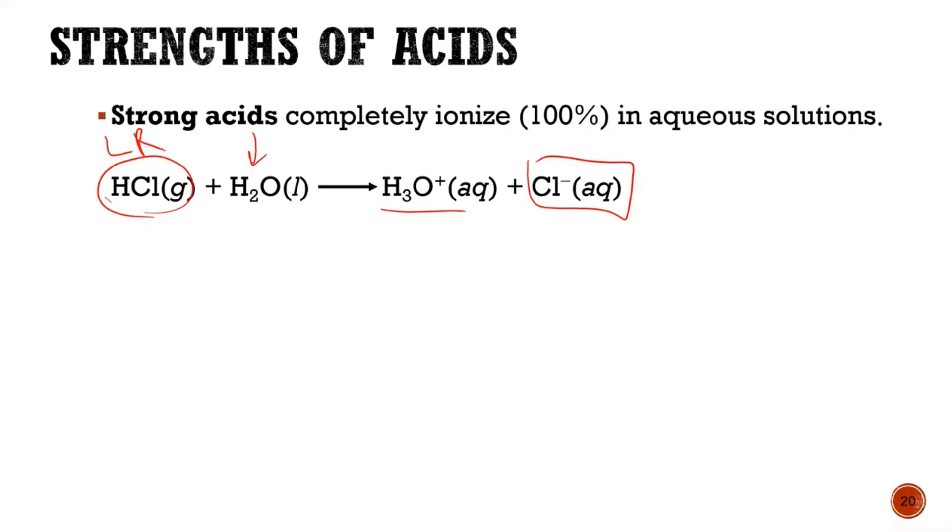So water is in excess. So what dictates the amount of hydronium and chloride is the limiting reactant, HCl. And the water is in excess. Why? It's the solvent. It's more abundant.